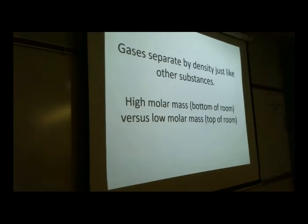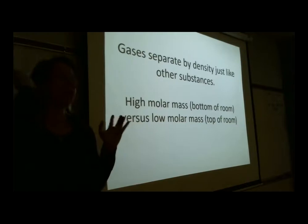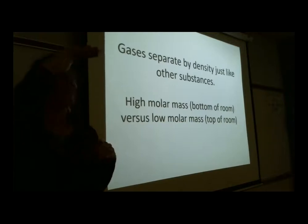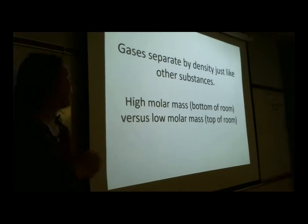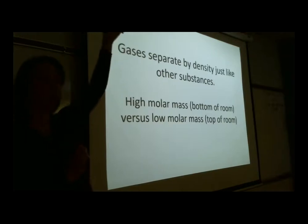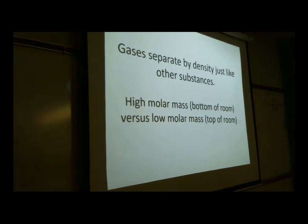Gases separate by density just like other substances. If a tank contains helium (MM=4), neon (MM=20), and argon (MM=30) and you open the valve, helium — being lowest in molar mass and least dense — will rise to the ceiling. Krypton would settle lower. Gases behave the same way layers of liquids of different densities do in a beaker.